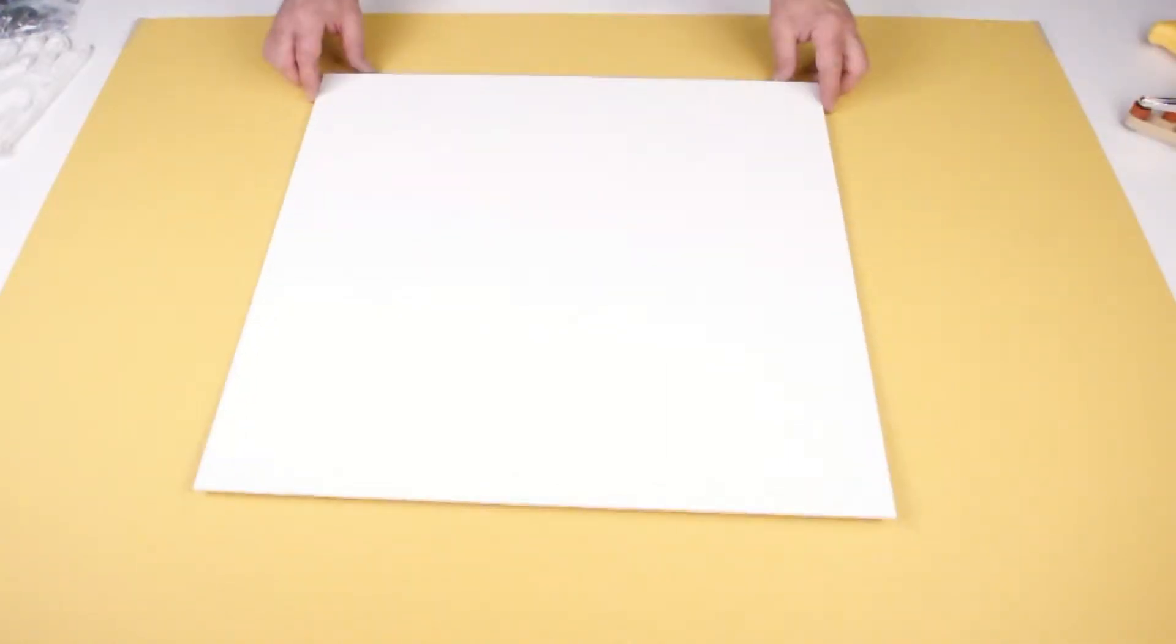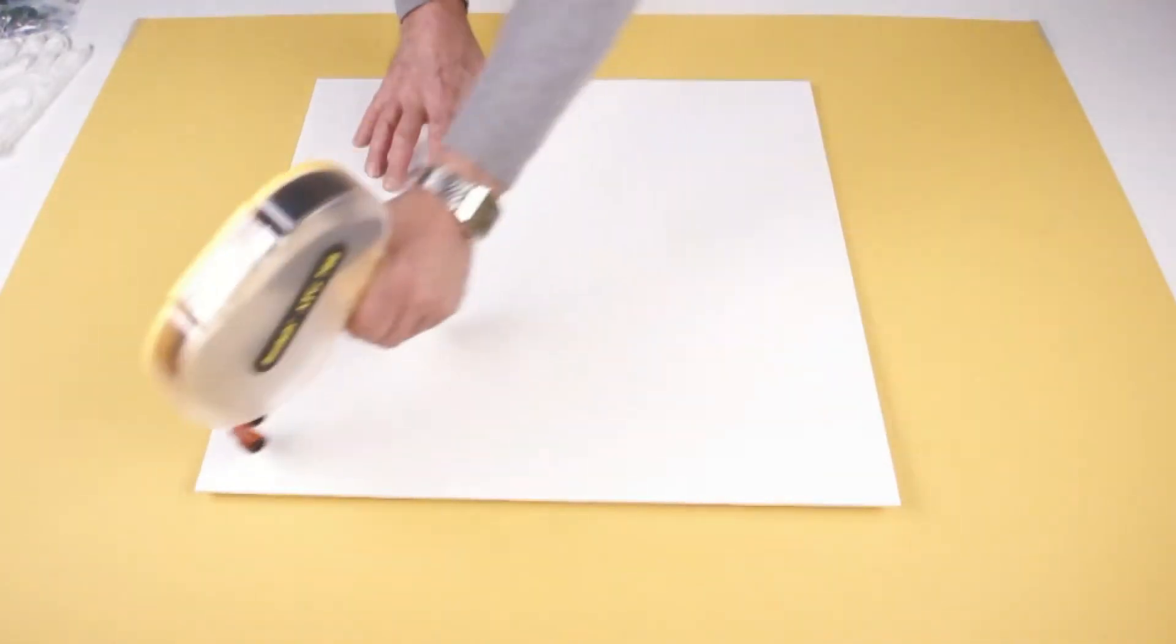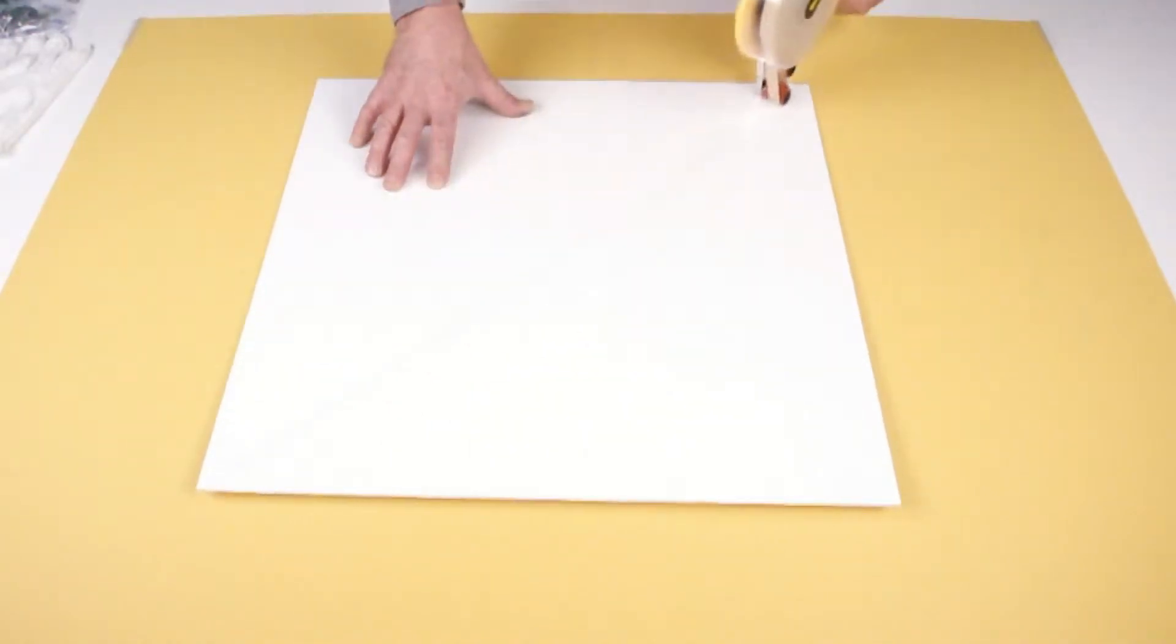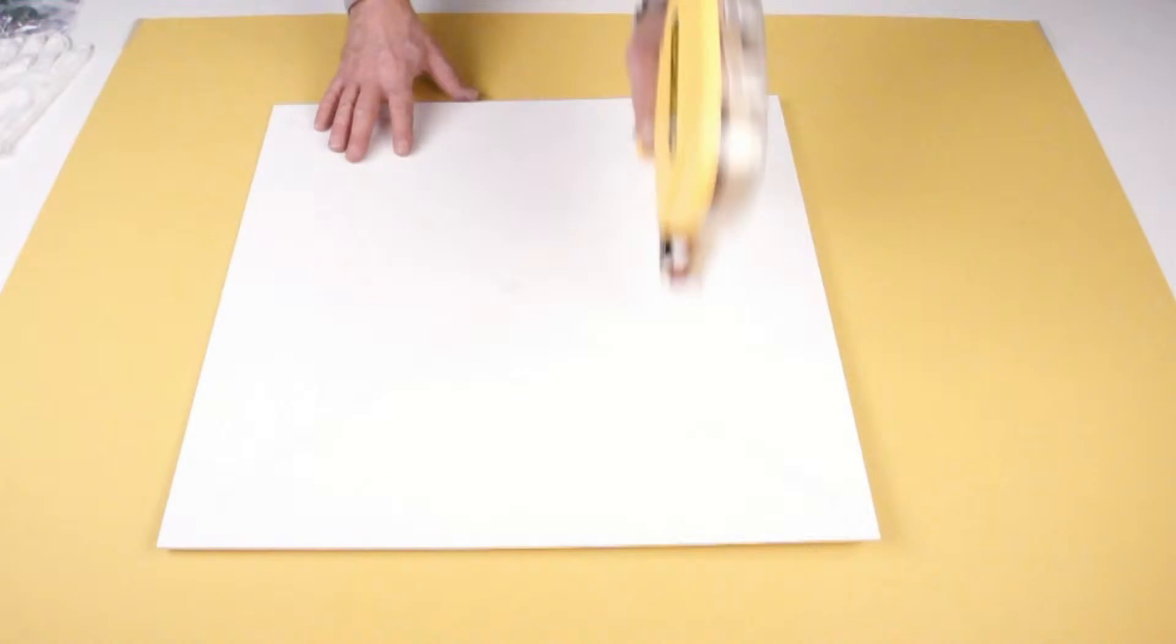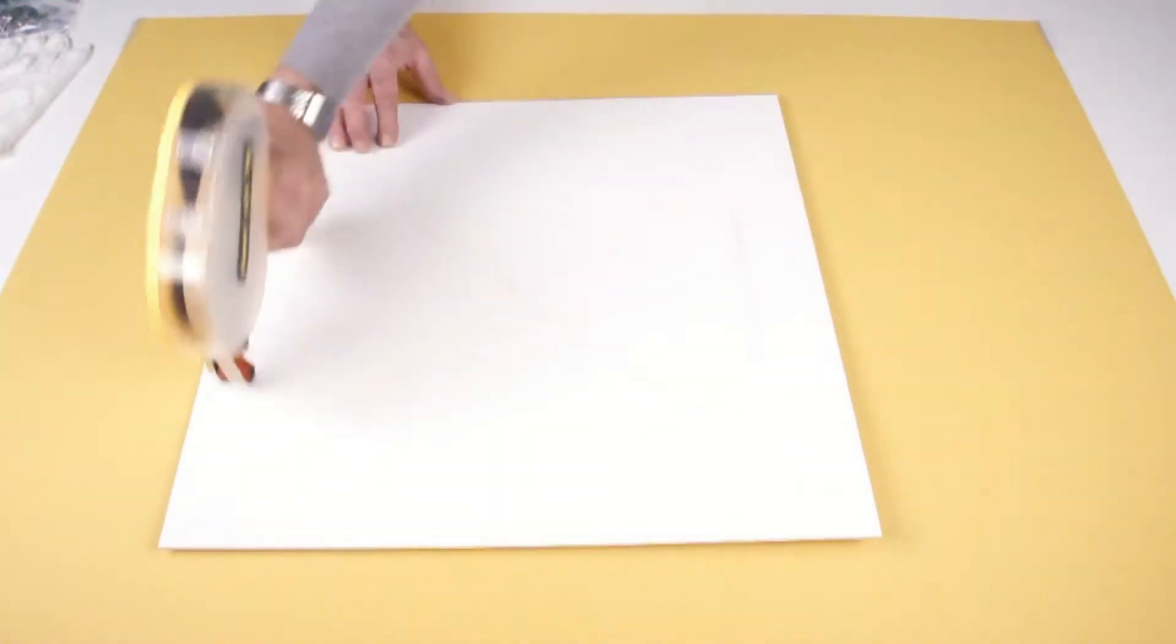First run, in a criss-cross pattern, the adhesive tape on the surface of your backing board. Then fill in the remaining areas.